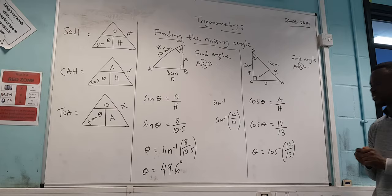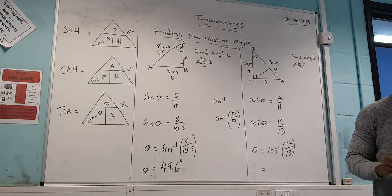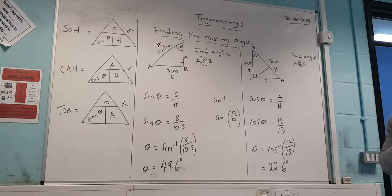So straight away, theta will be equal to the cos inverse of 12 over 13. So press the shift. Press cos. Put this there. And what is our answer? 22.6. 22.6 degrees. And that is your answer.